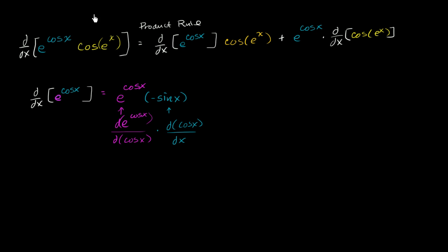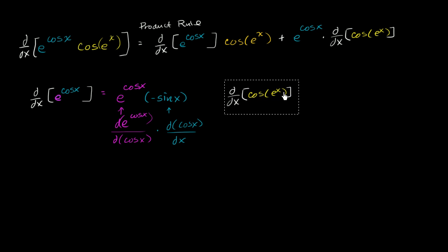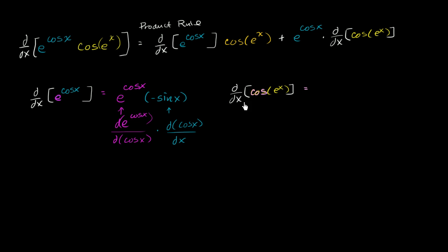Now let's figure out the derivative of cosine of e to the x. Applying the chain rule again, we need the derivative of cosine of something with respect to that something — in this case e to the x. The derivative of cosine of something with respect to that something is negative sine of that something, so negative sine of e to the x.